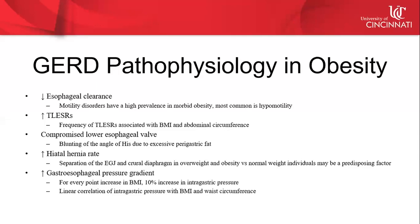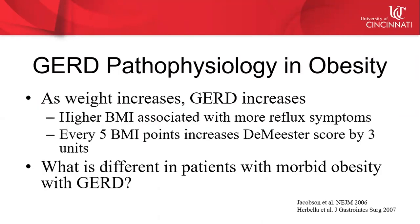There is definitely an increase in the gastroesophageal pressure gradient in obesity. For every one-point increase in BMI, there is a 10% increase in intragastric pressure, and there is a linear correlation of intragastric pressure with both BMI and waist circumference. Higher BMI is associated with more reflux symptoms, and for every five BMI point increase, the DeMeester score increases by three units.